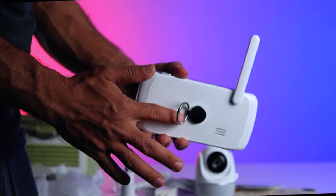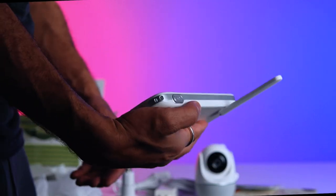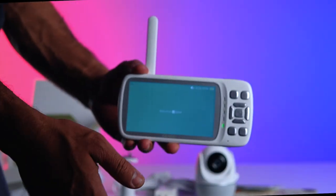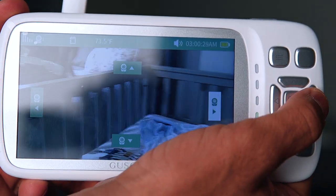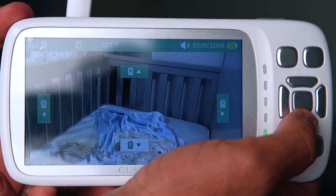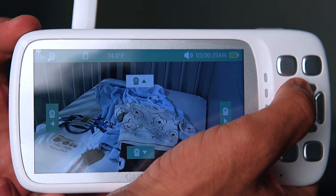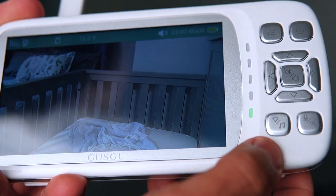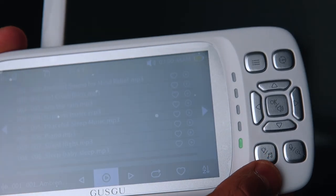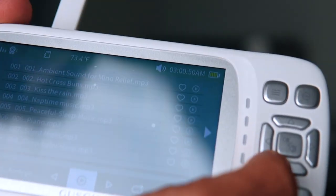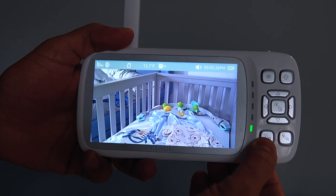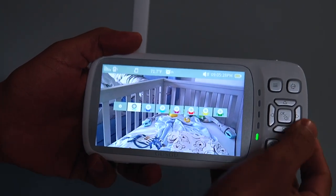But wait, there's more. Let's talk about noise cancellation, a feature that any parent will tell you is an absolute must-have. With the Guzgu Long Range Baby Monitor, we can bid farewell to background noise disrupting our precious sleep. Thanks to its advanced noise cancellation technology, this baby monitor focuses solely on picking up our baby's cries, filtering out any ambient sounds like fans, purifiers, or air conditioning units. This means we can enjoy a restful night's sleep, safe in the knowledge that we'll be alerted promptly if our baby needs us.